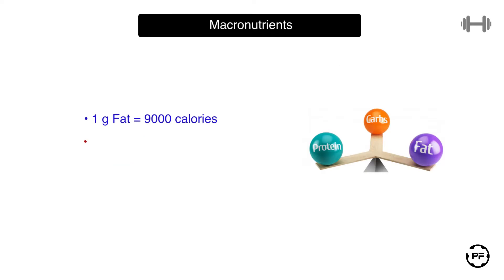If we take a closer look, we notice that 1 gram of fat contains more calories than 1 gram of proteins and carbohydrates together.